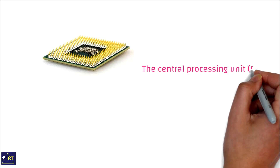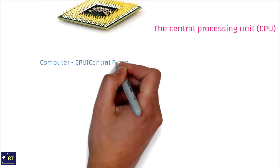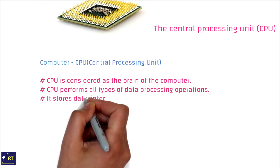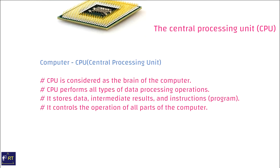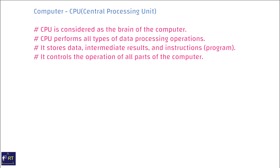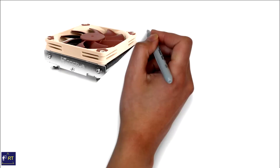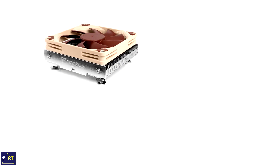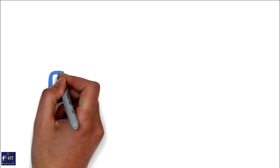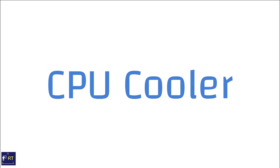The Central Processing Unit — CPU. The CPU is considered the brain of a computer. It performs all types of data processing operations, stores data, intermediate results, and instructions, and controls the operation of all parts of the computer.